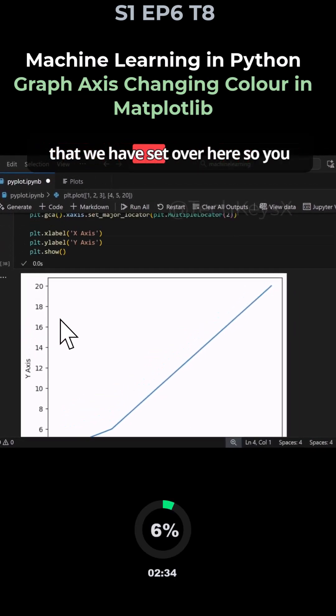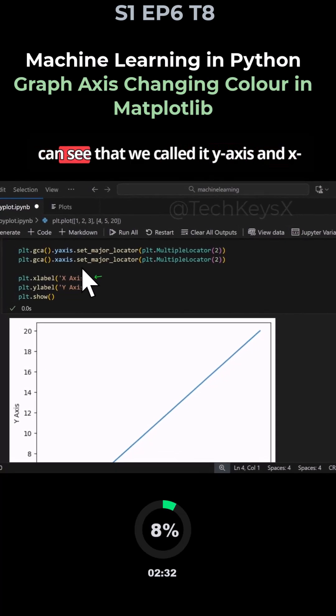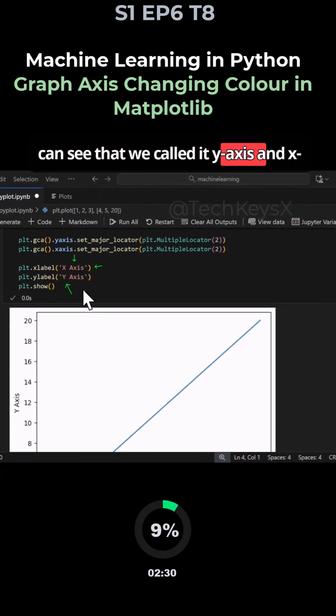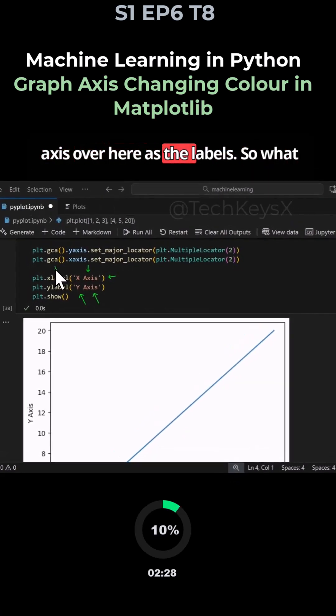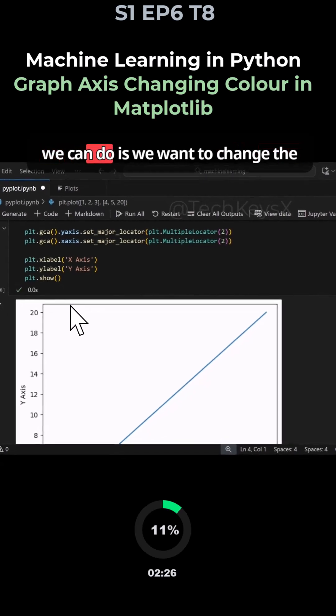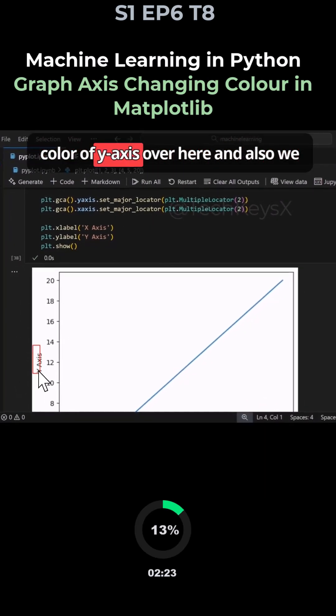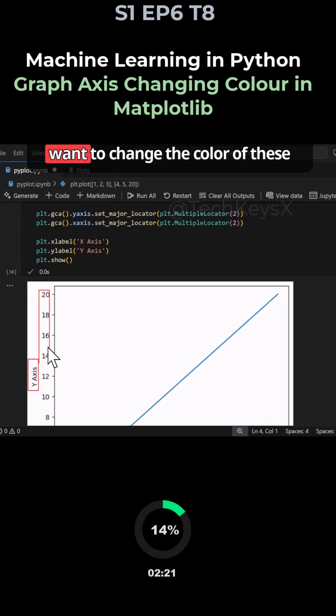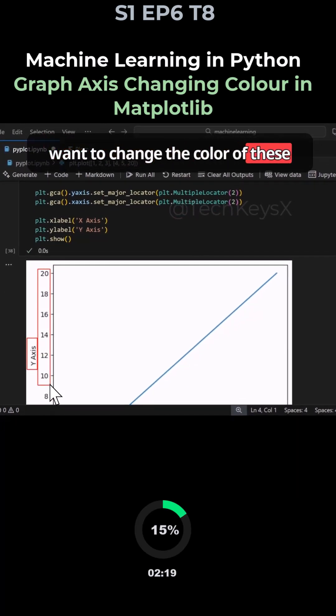This is something we have set over here, so you can see that we called it y-axis and x-axis as the label. What we want to do is change the color of y-axis over here and also change the color of these tick marks.